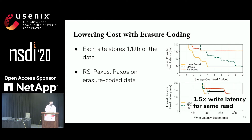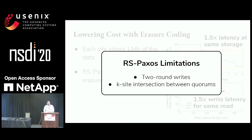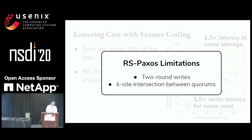However, RSPaxos often has significant write latency and read latency overhead compared to ePaxos. RSPaxos has two main limitations. The first is that it executes writes in two rounds, whereas ePaxos can do this in a single round, which explains the latency difference.